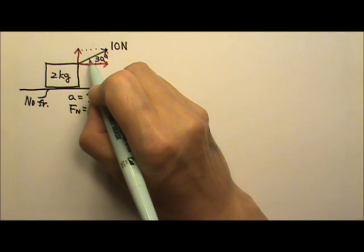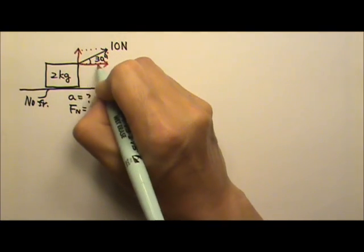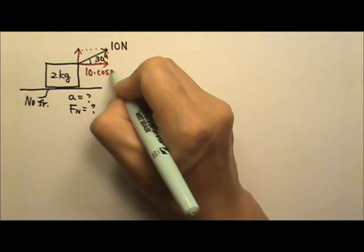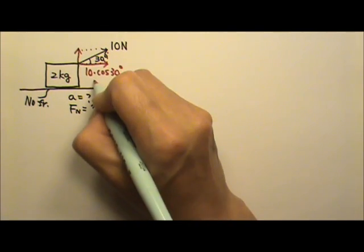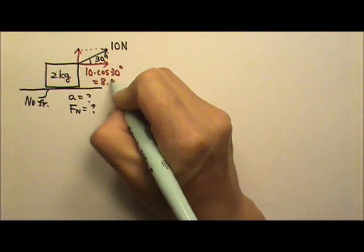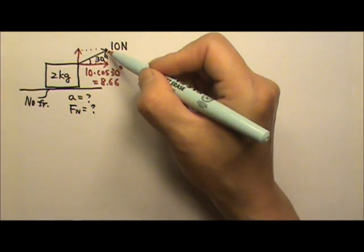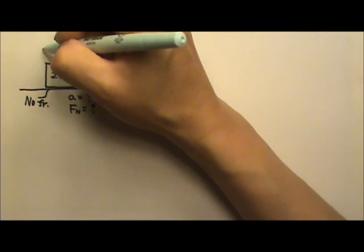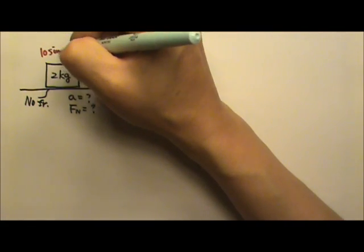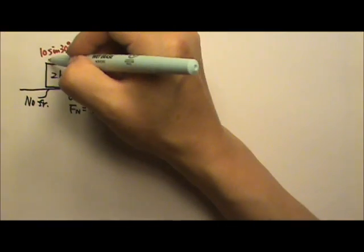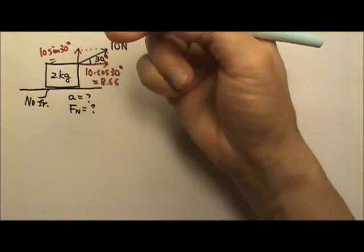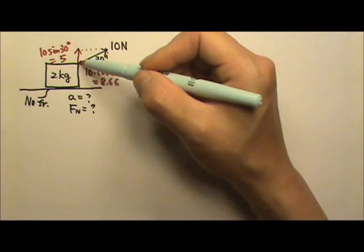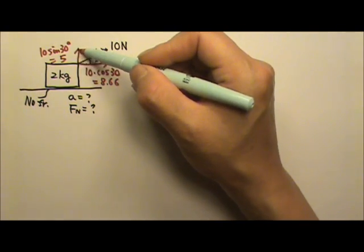This one is adjacent to the angle, so this is the cosine component — it's 10 times cosine 30 degrees, which gives you 8.66. That one is opposite to the angle, so this will be 10 sine 30 degrees. If you find this is cosine, that one must be the sine. This one is 5.